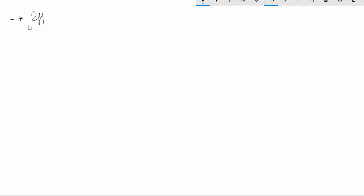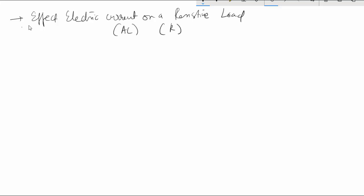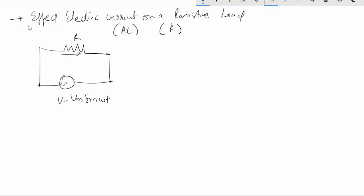In this video I will show the effect of electric current on a resistive load. This current is AC and the load is R. If I am connecting a resistance R and supplying AC voltage given by V equals Vm sine omega t, the current flowing in this resistance will be given by I equals Im sine omega t.